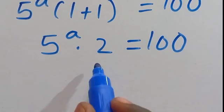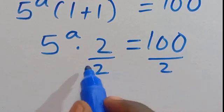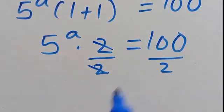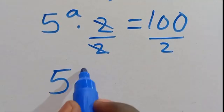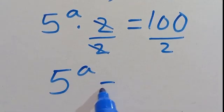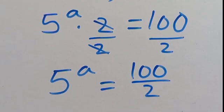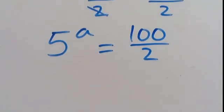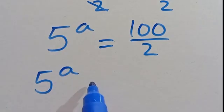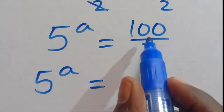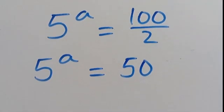So from here, let's divide both sides by 2 — this will cancel this, so we are going to have 5 to the power of A equals 100 divided by 2. So 5 to the power of A equals 100 divided by 2, which gives us 50.